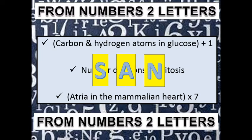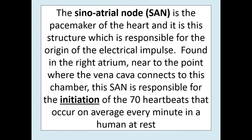The SAN — the sinoatrial node — is your pacemaker. It is the structure responsible for the origin of the electrical impulse that travels around the myogenic tissue. It is found in the right atrium, very near to where the vena cava connects. In GCSE you just labeled an X in the right atrium; at A-level, the SAN in the right atrial wall is responsible for initiating on average 70 heartbeats per minute at rest.